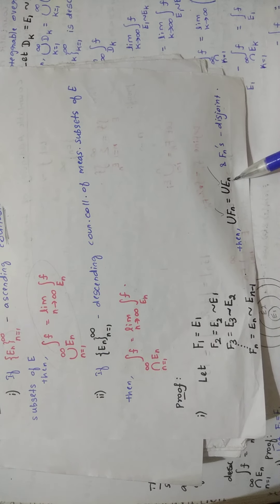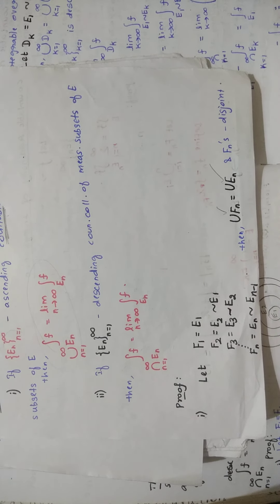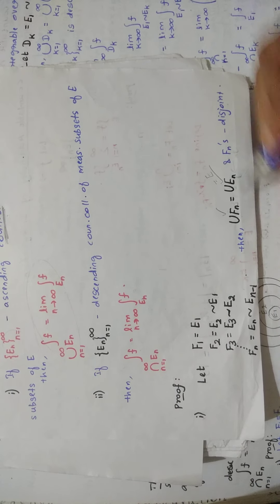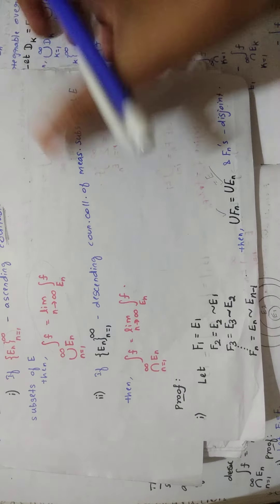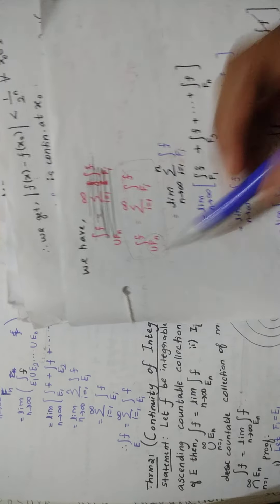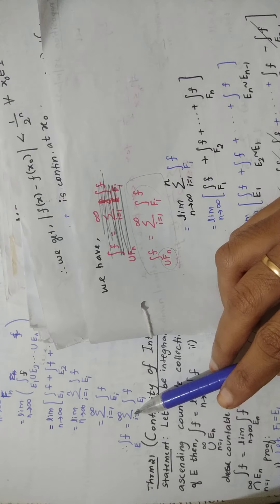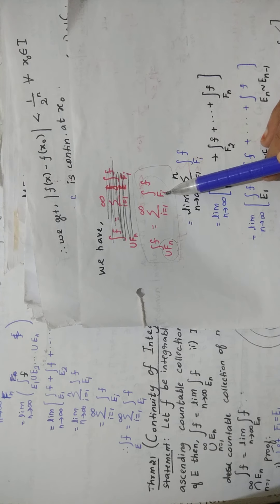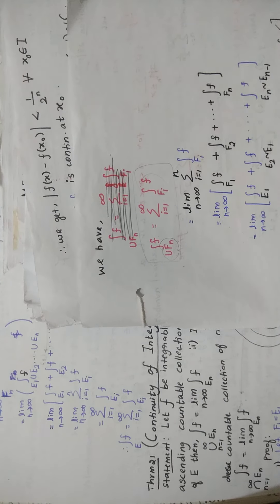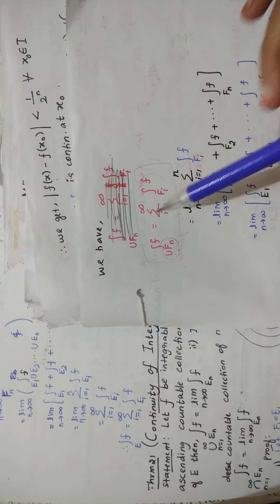Union En is E, so union En means E. You are taking union En equal to union Fn, so instead of writing E you can write union Fn. Then the integral of f over union Fn equals summation i equal to 1 to infinity of the integral of f over Fi. You make a small adjustment: write the summation as limit n tends to infinity of summation i equal to 1 to n — the same thing written differently.